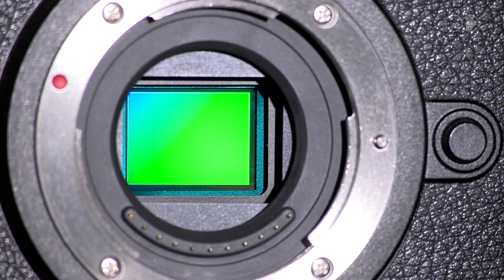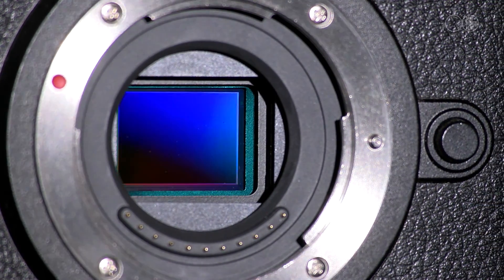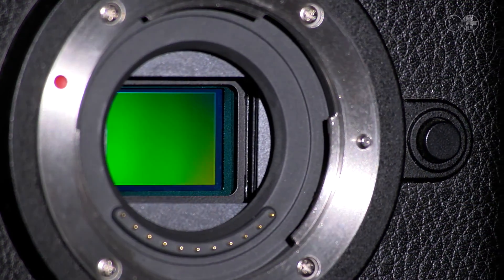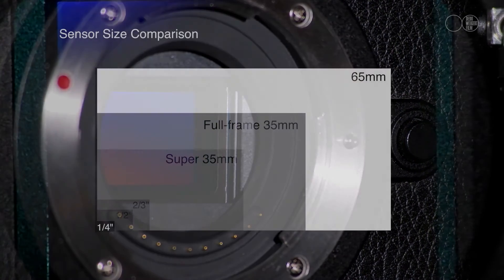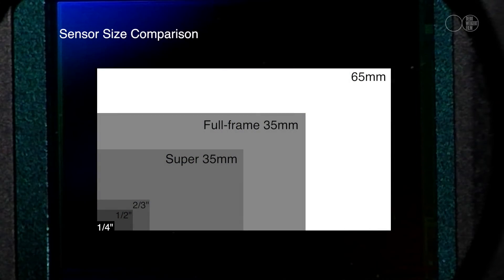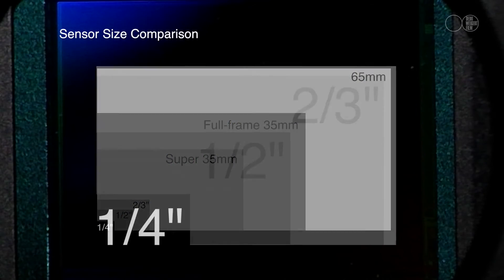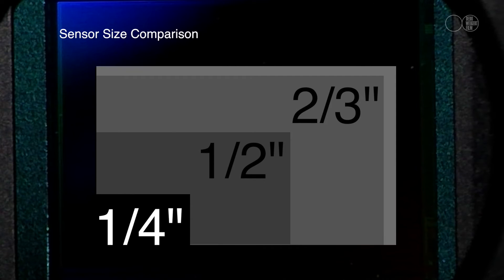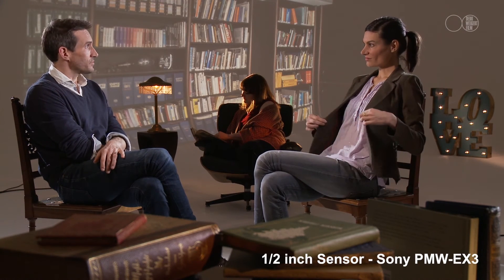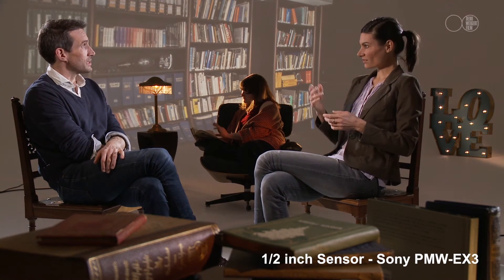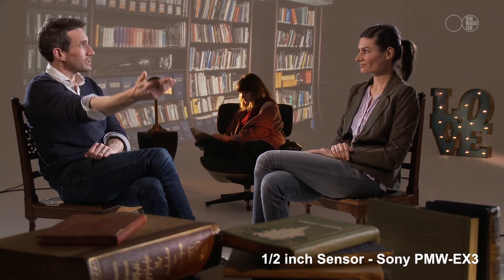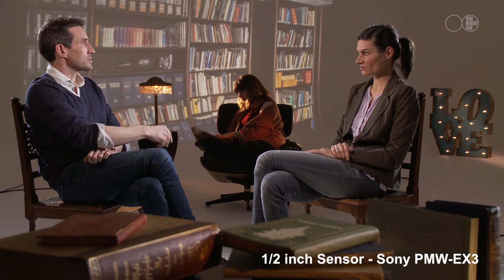We have therefore demonstrated the effect that sensor size can have on depth of field. For those filming with smaller sensors, it can be difficult or impossible to suitably throw the background out of focus. This can make producing cinematic images very difficult, and contributes to what many call the all-in-focus look, or the video look.